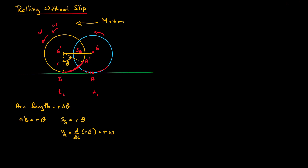Taking successive derivatives, if we take AG we again take the derivative, but now of Rω, and this gives us R·α. So these relationships — VG = Rω and AG = Rα — are valid only for rolling without slip, and they are very useful.